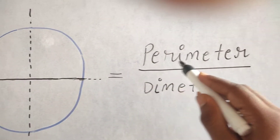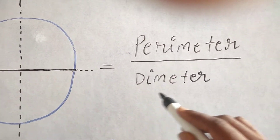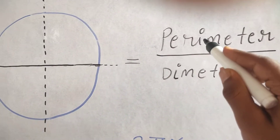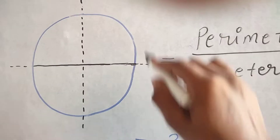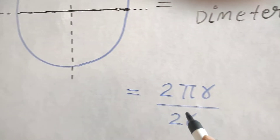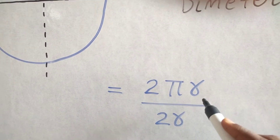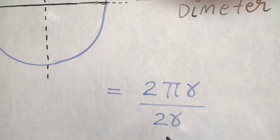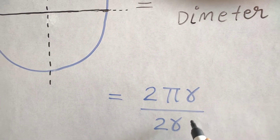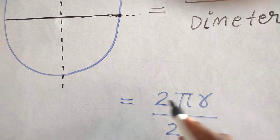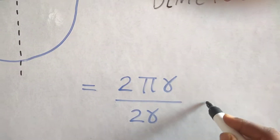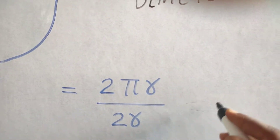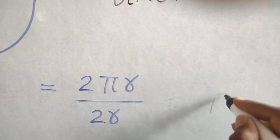It is equal to parameter upon diameter. The parameter is 2 pi r upon r. So 2 r will cancel from 2 r and it is equal to pi.